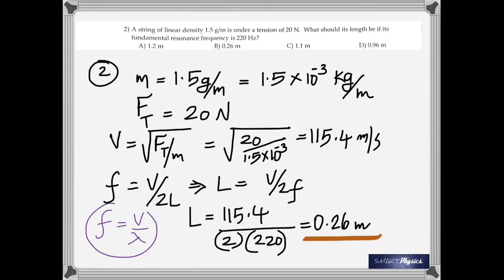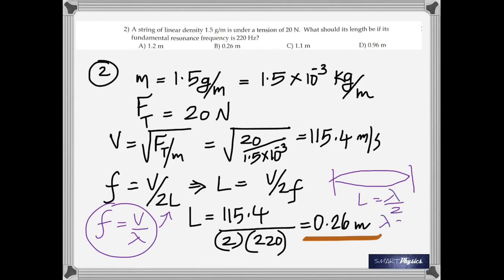Rearranging, you get the length of the string as 0.26 meters. Remember, frequency is V divided by lambda, and lambda is 2 times the length because the whole string is vibrating as one segment. When the string vibrates in one segment, that segment is half the wavelength, so lambda equals 2 times the length.